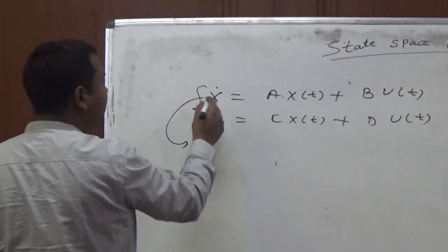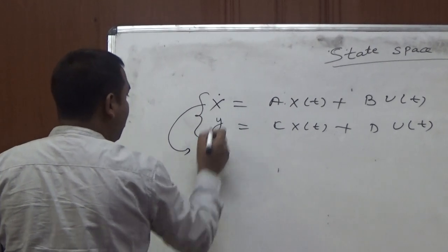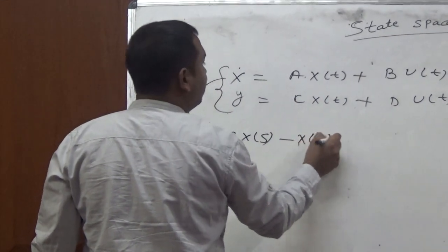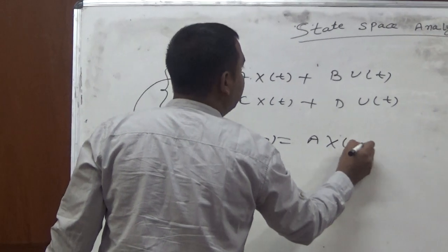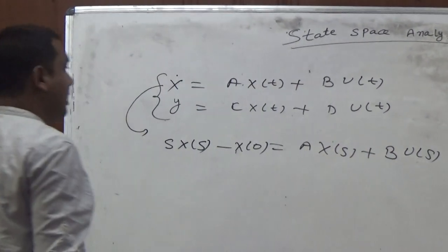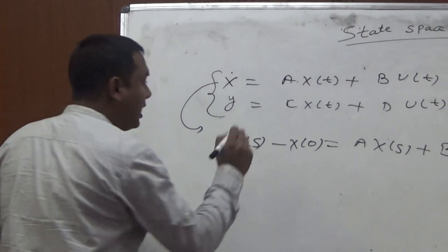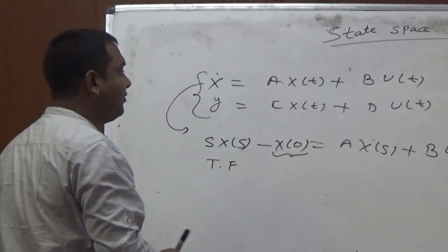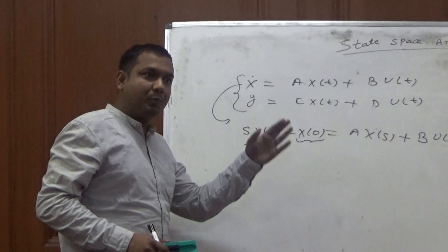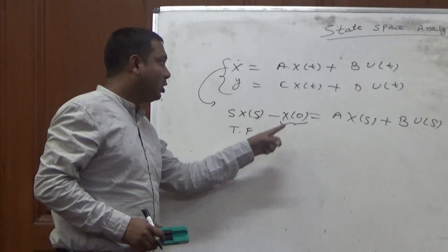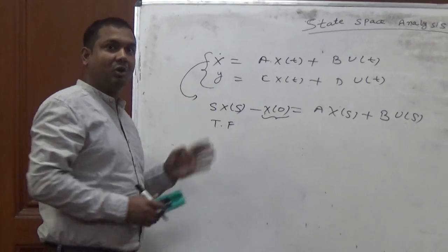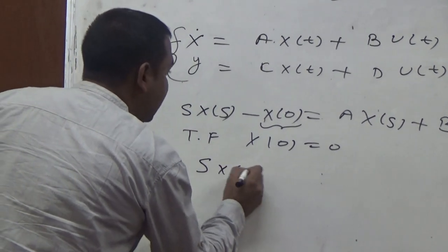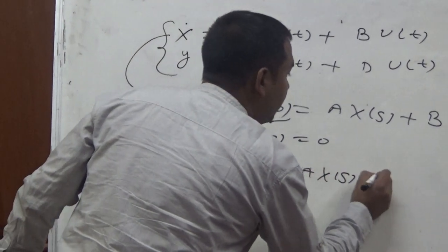I am going to take the Laplace transform on both sides of both equations. By taking the Laplace transform of the state equation, we have: sX(s) minus X(0) equals AX(s) plus BU(s). For the transfer function model, as I have already told you, we consider initial conditions to be zero — because the definition is the ratio of Laplace transform of output to input while initial conditions are set to zero. So X(0) equals zero, and we have sX(s) equals AX(s) plus BU(s).